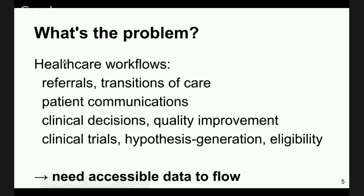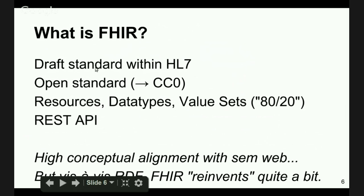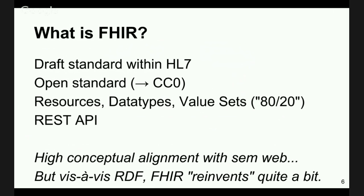I want to describe the emerging FHIR, or Fast Healthcare Interoperability Resources specification, which is not going to solve all of those problems but is a useful building block. FHIR is currently a draft standard in the HL7 world — Health Level 7, the International Standards Development Organization for Healthcare Standards. One of the most important things to understand about FHIR is that it's an open standard made available under a Creative Commons zero license, which is effectively as close to public domain as you can get. Anyone can use it, extend it, and modify it.